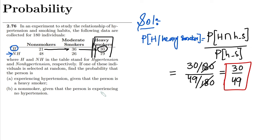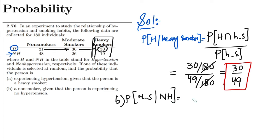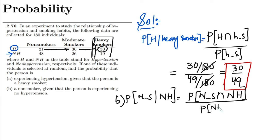Similarly, for part B: find the probability that a person is a non-smoker given that the person is experiencing non-hypertension. I have to find the probability that a person is a non-smoker, given no hypertension — that is, the person is a non-smoker and has no hypertension, divided by the probability of no hypertension.